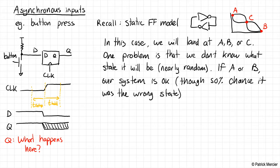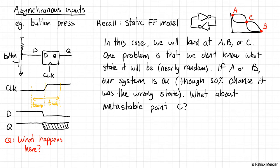What about metastable point C? This is problematic — we really don't want to land on it because first of all it's not a valid logic level, perhaps at VDD over 2. If this feeds into combinational logic at VDD/2, we could introduce a very large short-circuit current condition where a cascade of gates are all shorting from VDD through ground — that's a disastrous scenario. And frankly, we just can't predict what's going to happen to the logic after that.